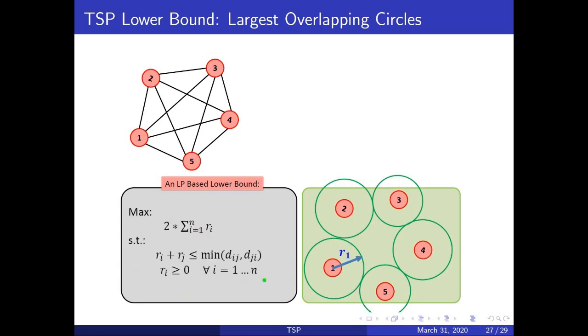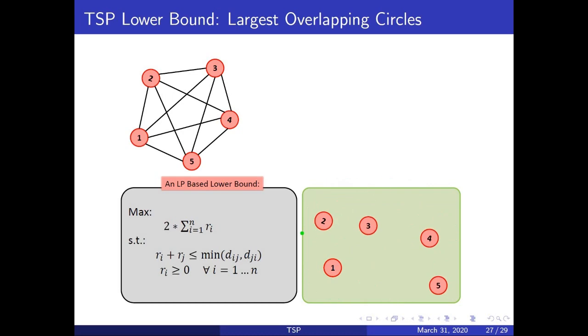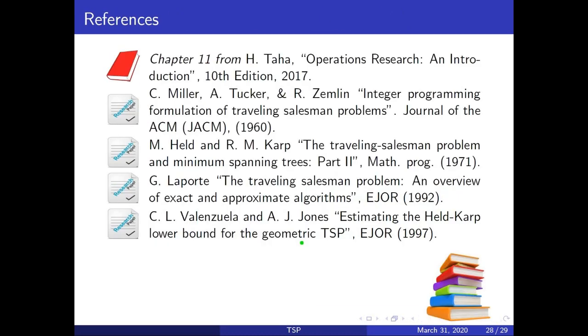This is a generic representation of the same formulation. Sometimes the lower bound that we obtain here is very good, sometimes it is not. For example, here the lower bound is very loose.